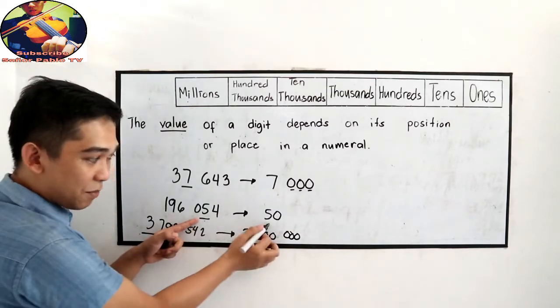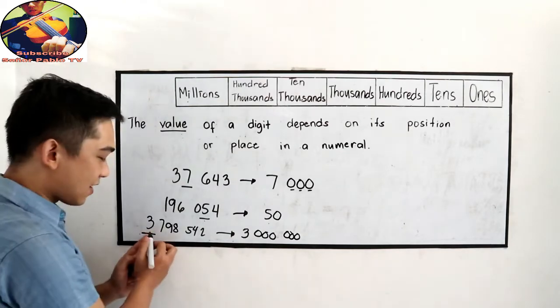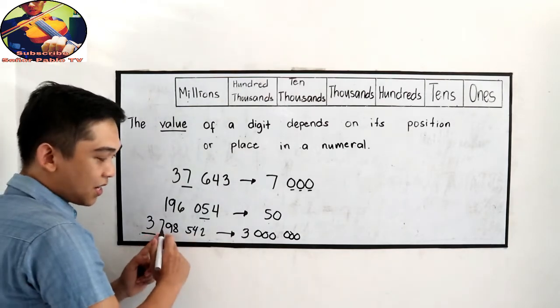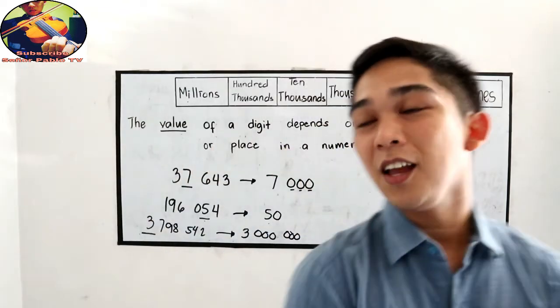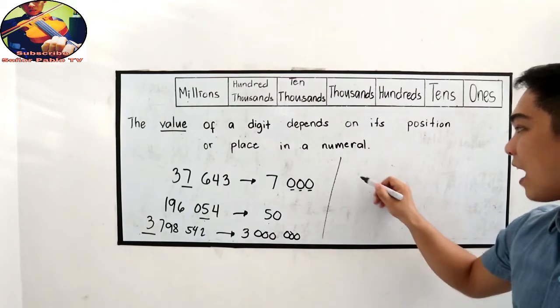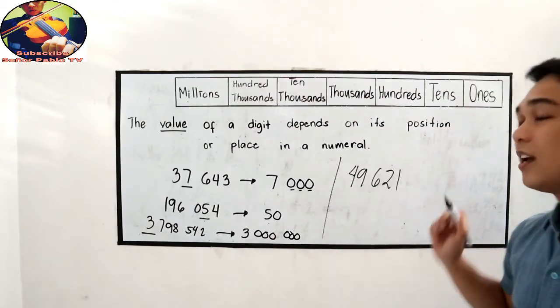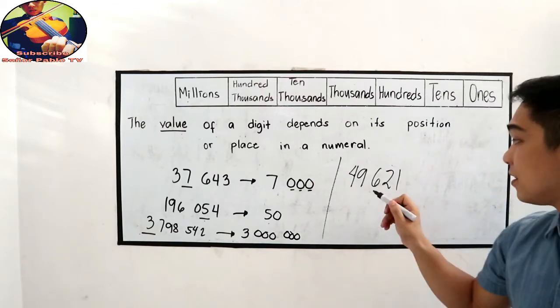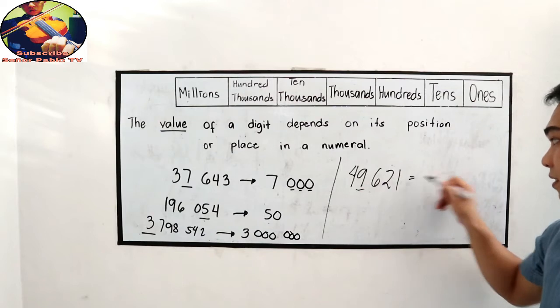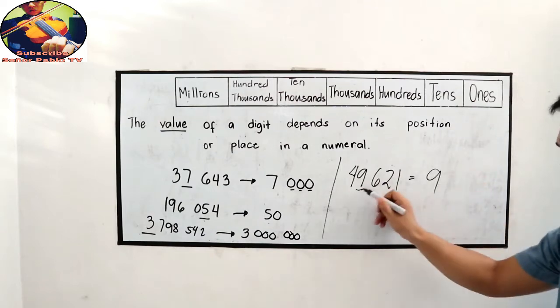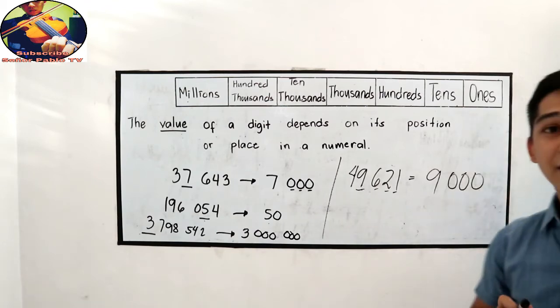Copy 5, then change 4 to 0. Then copy 3, then change the remaining numbers to 0. Let's try one more. Let's say I have 49,621. The underlined number is 9. So copy 9. That means the value now is, change to 0, 0, 0, 0. That is 9,000.